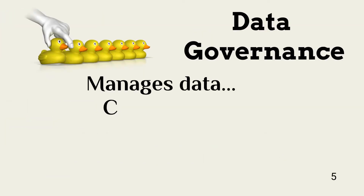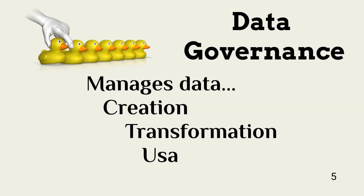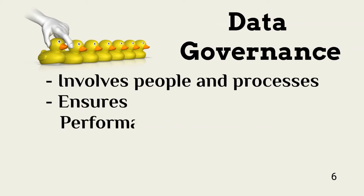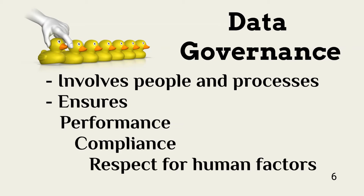Data governance is an effort within an organization to manage the safe and proper creation, transformation, and usage of information. Data governance teams achieve their objectives by ensuring that people and process management ensures expected processing and delivery of information, compliance with both external and internal policies, statutes and regulations, and ensures respect for human factors affected by how information is managed.